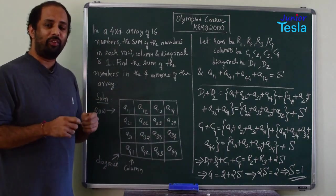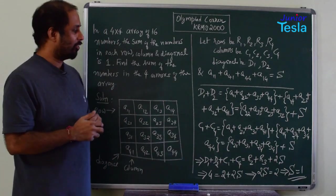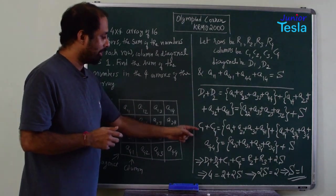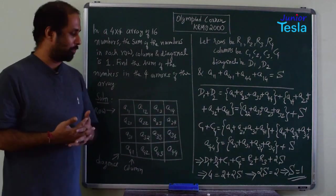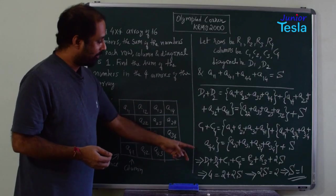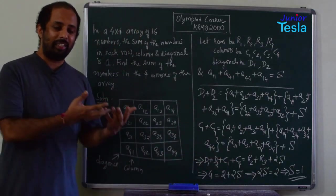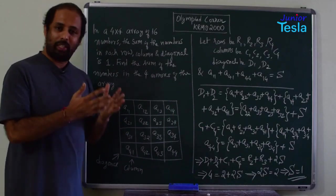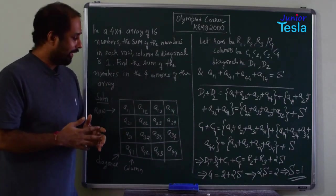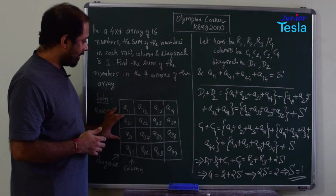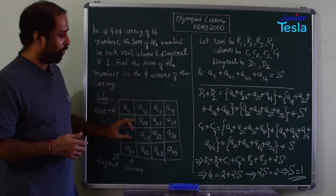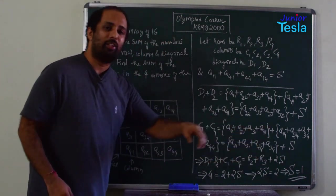What we do is we will just add these two lines: d1 plus d2 and c1 plus c4. Let us add and see what happens. If you are adding the left hand side, you will have d1 plus d2 plus c1 plus c4 and on the right hand side you have 2S. Then if you have taken these entries, it is nothing but r2 and r3. So r2 plus r3 plus 2 times S.